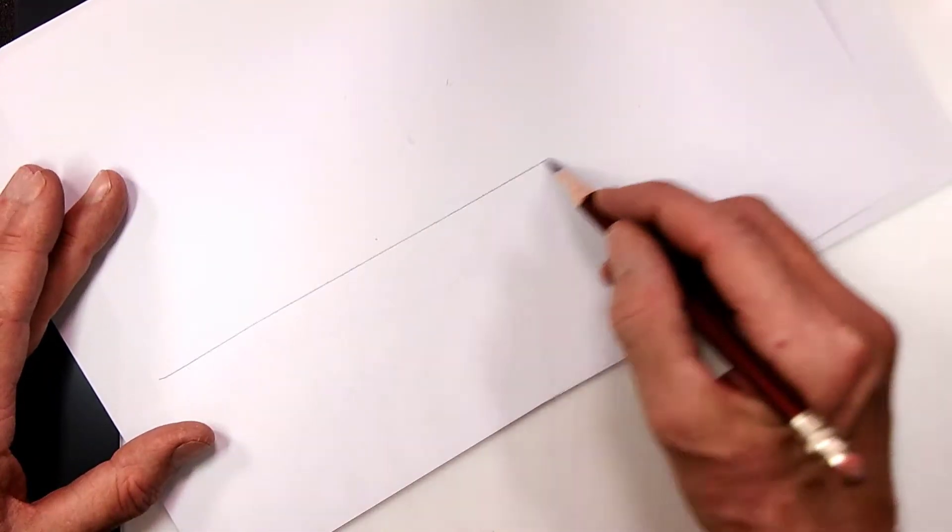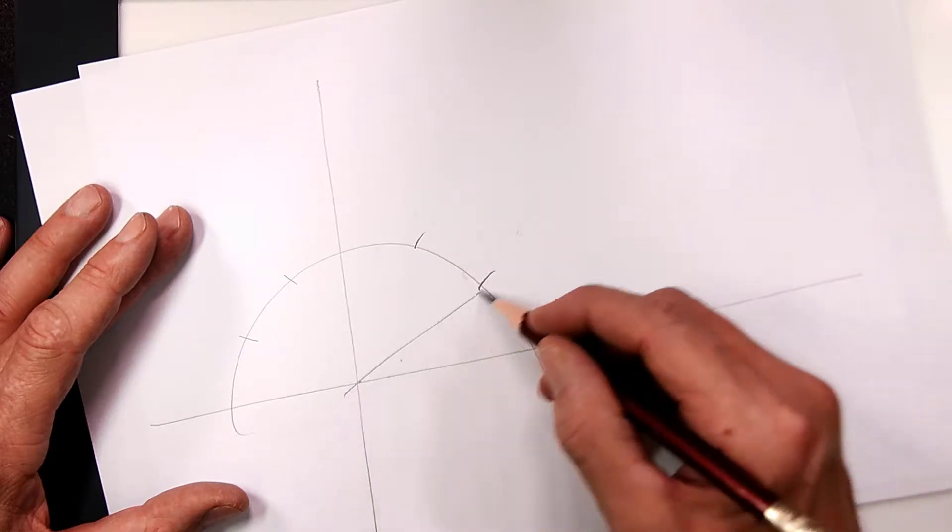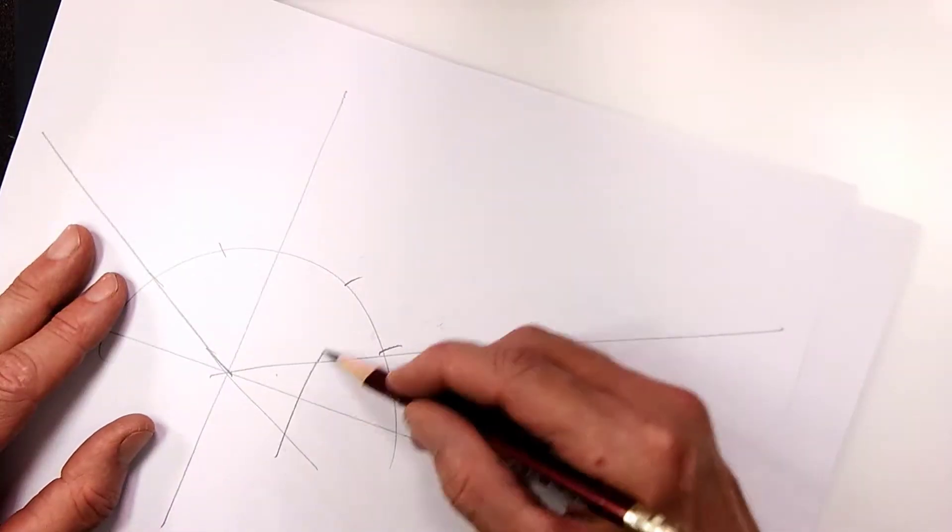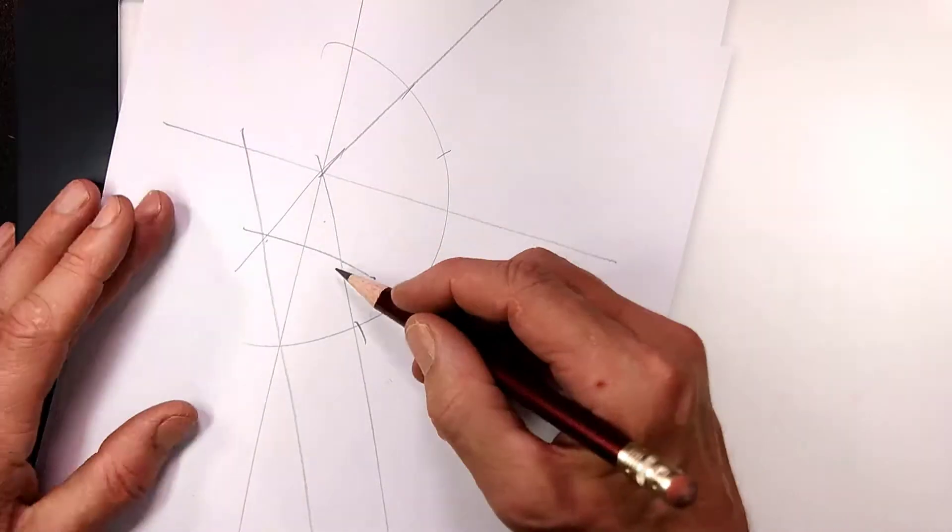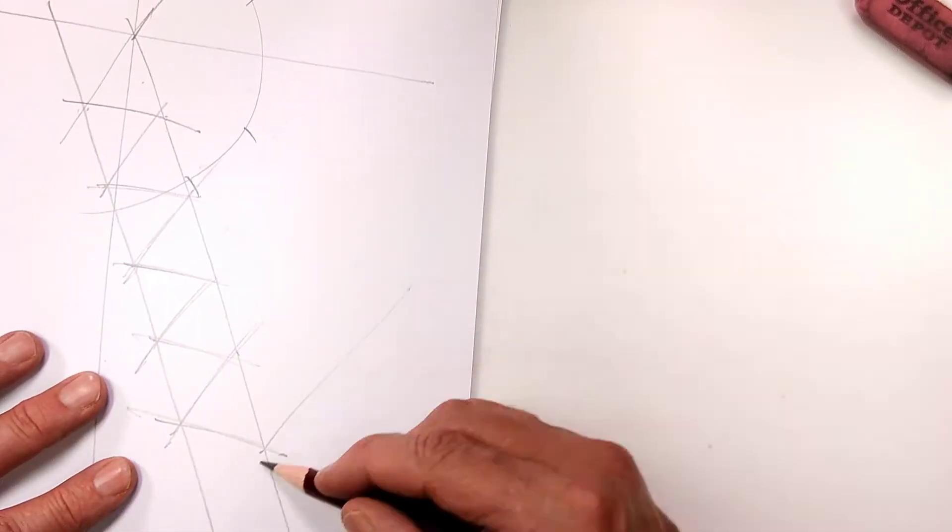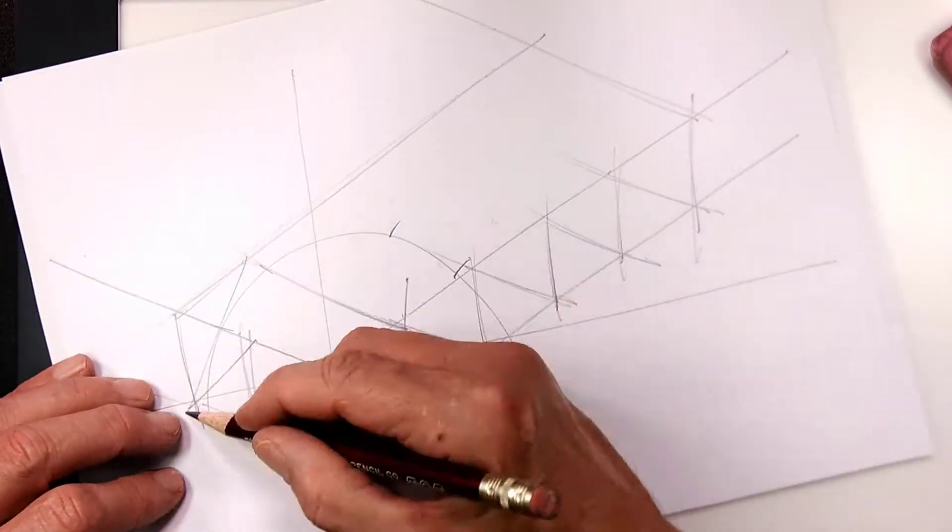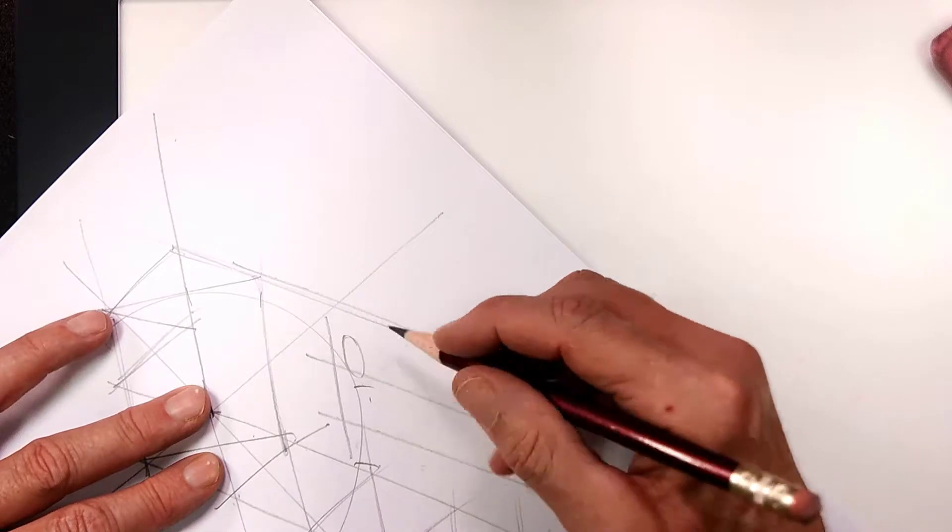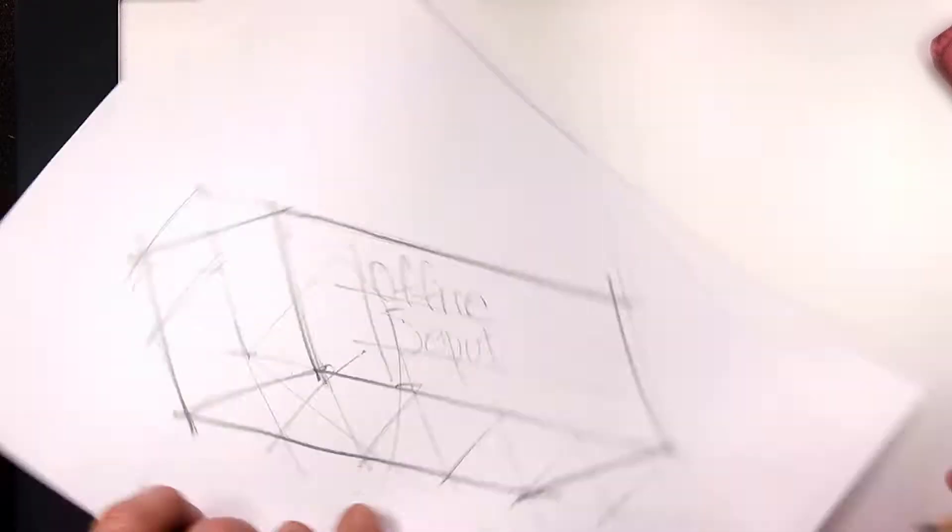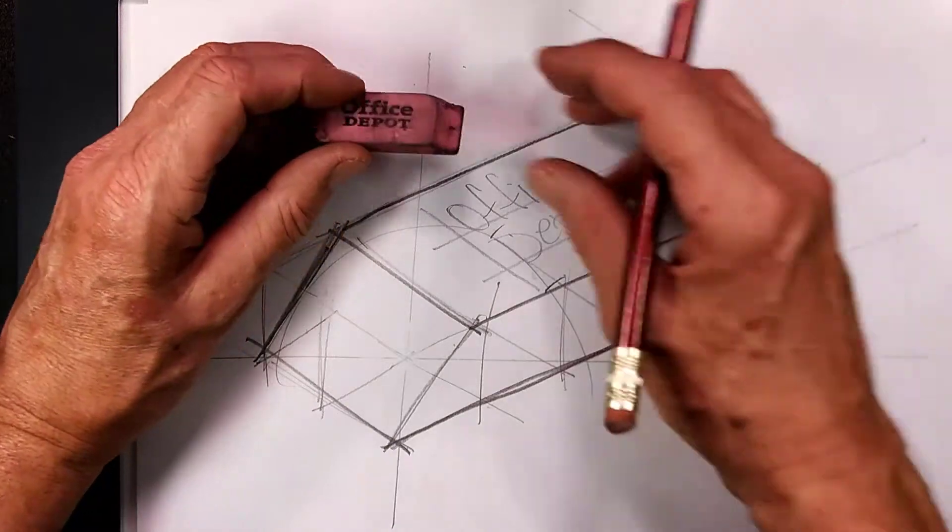I need my axes. This is an isometric of the Office Depot eraser here.